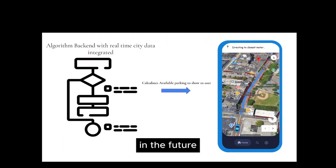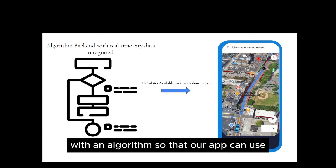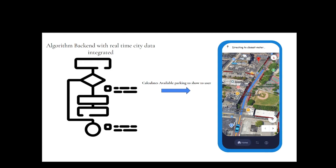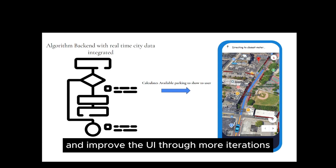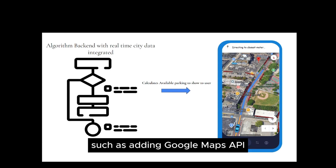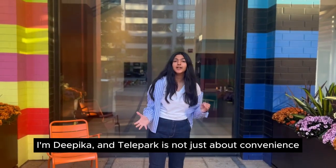In the future, we hope to integrate live data through a back-end system with an algorithm so that our app can be used by hundreds across Boston, and improve the UI through more iterations, such as adding a Google Maps API.